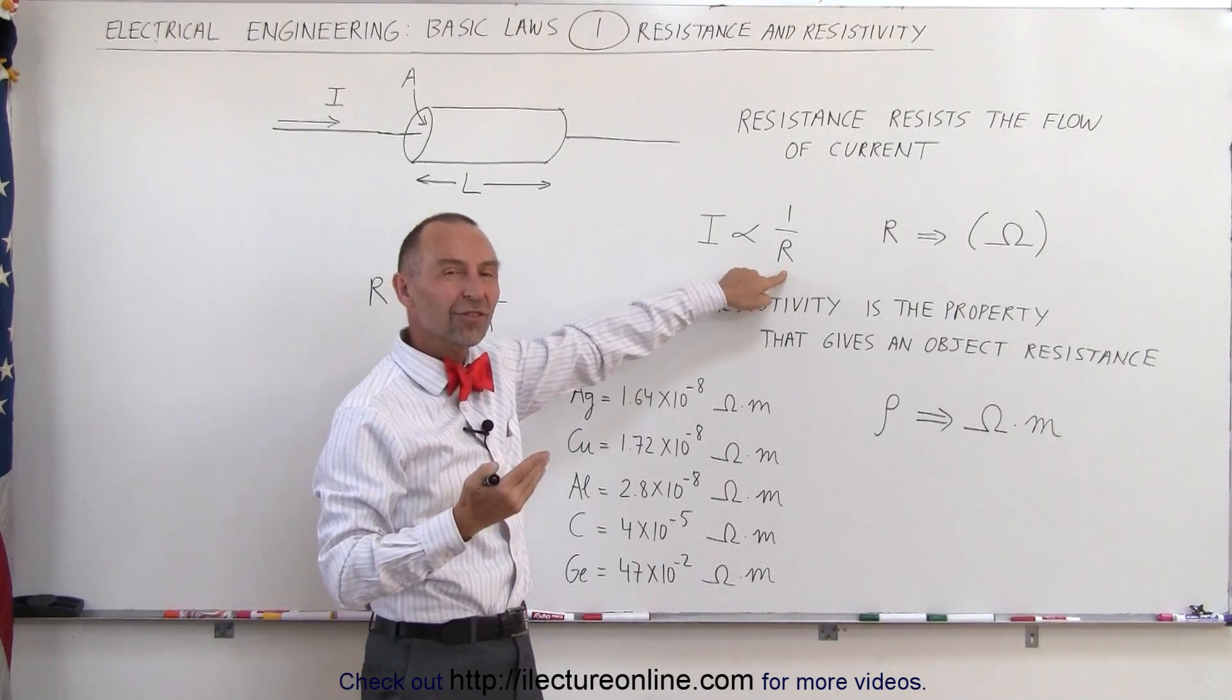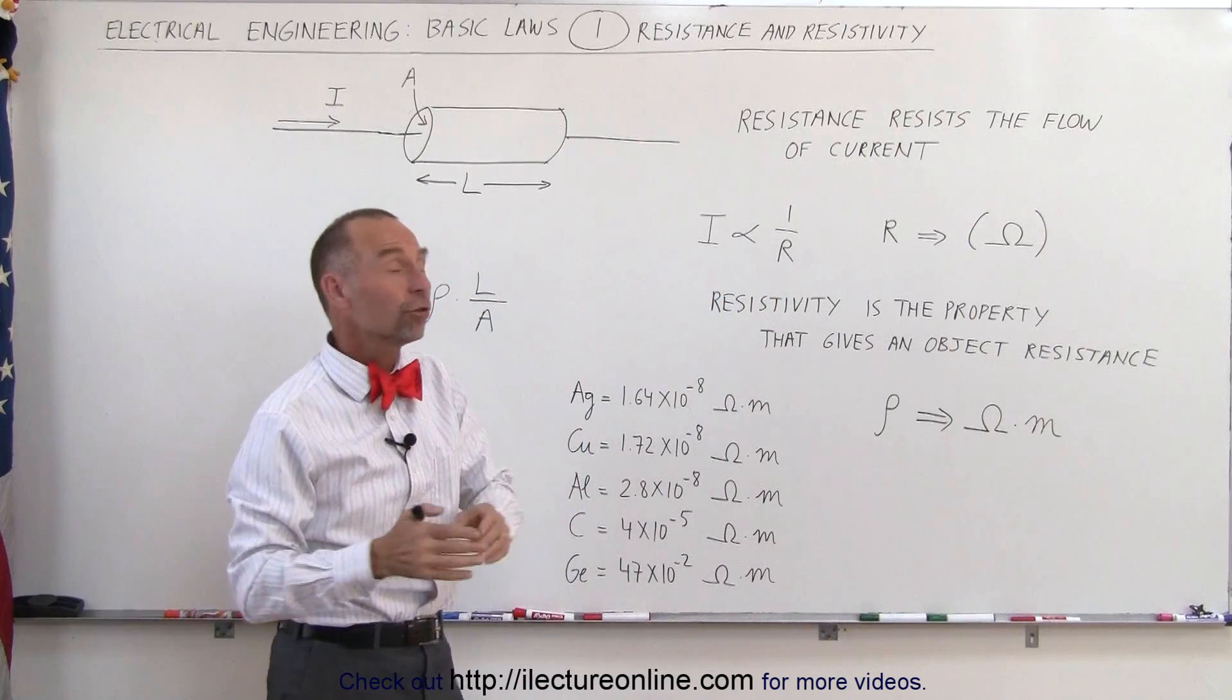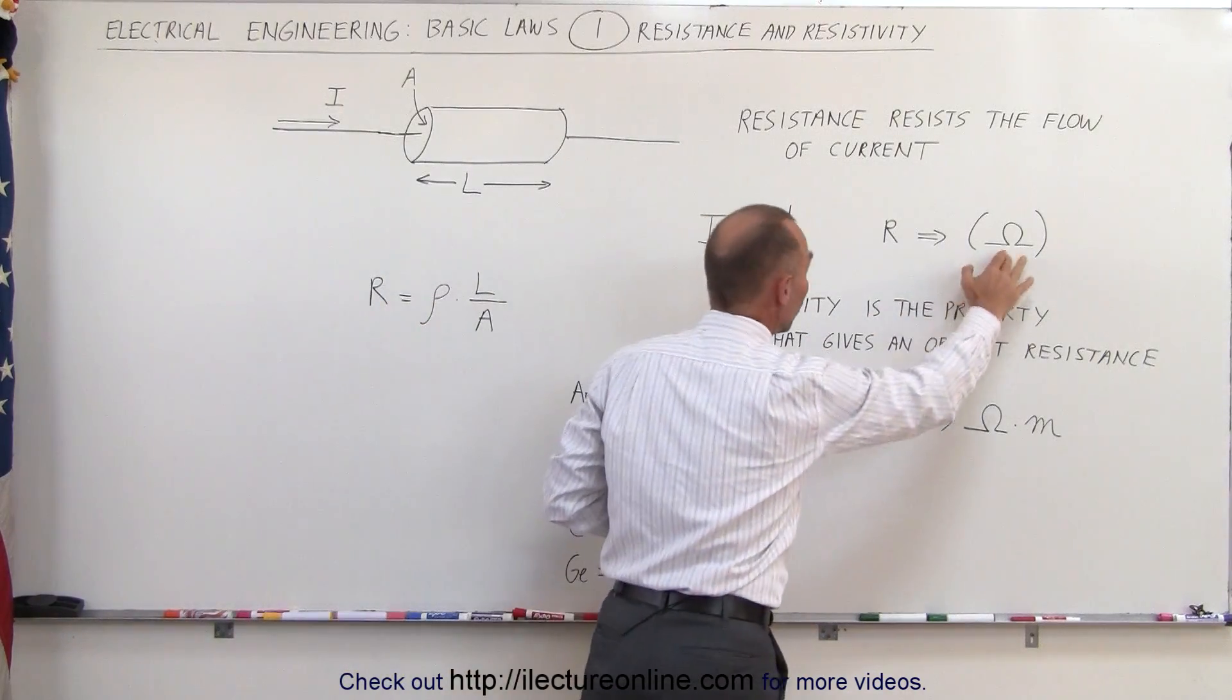If you double the resistance, you will halve the current. Triple the resistance, you'll have one-third the current, and so forth. The units for resistance is ohms.